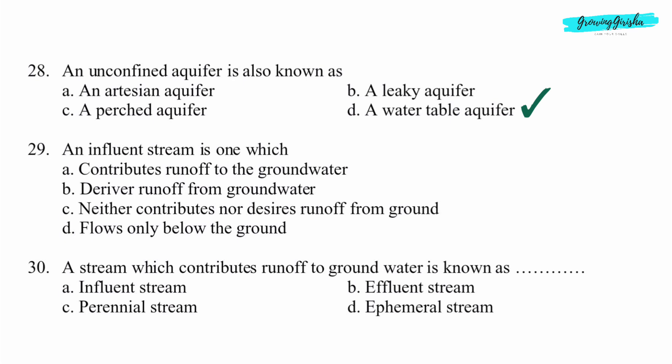Question 29. An influent stream is one which? Option D: A stream which contributes runoff to groundwater. Question 30. A stream which contributes runoff to groundwater is known as? Option D: Influent stream.